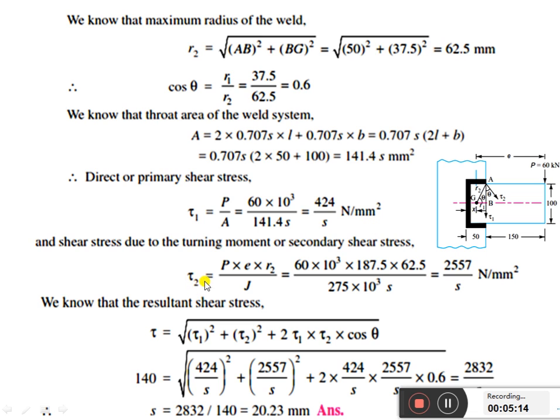Secondary shear stress, that is τ₂ equals P × e × r₂ divided by J. If we substitute the values, we will get τ₂ equals 2557 divided by s Newton per mm².